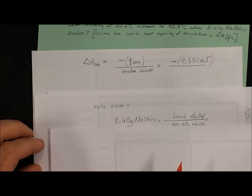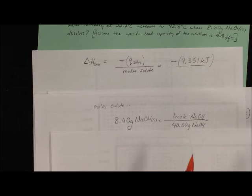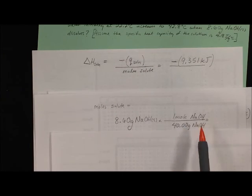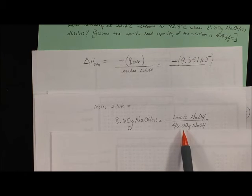Moles of solute: we have 8.60 grams of sodium hydroxide. Using the molar mass, which is approximately 40 grams, using the molar mass of sodium hydroxide.